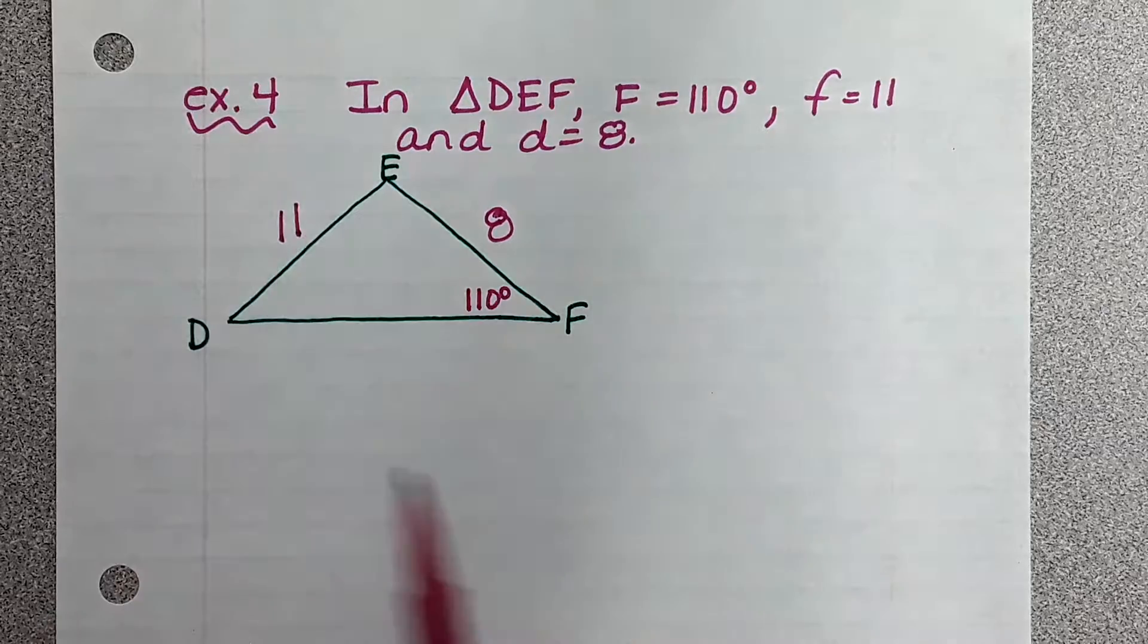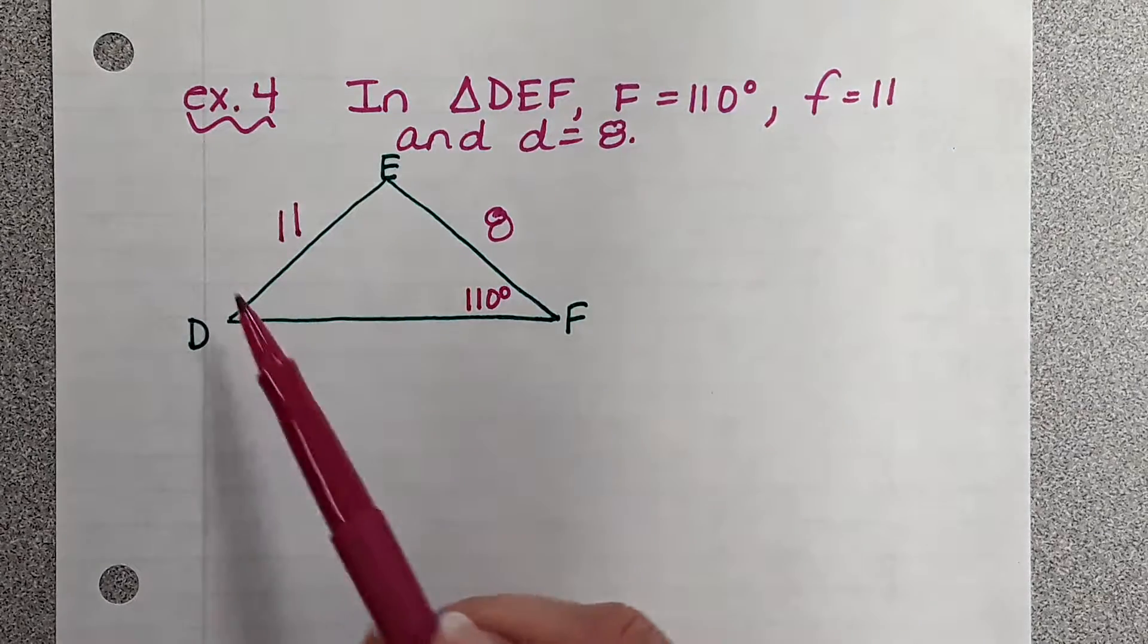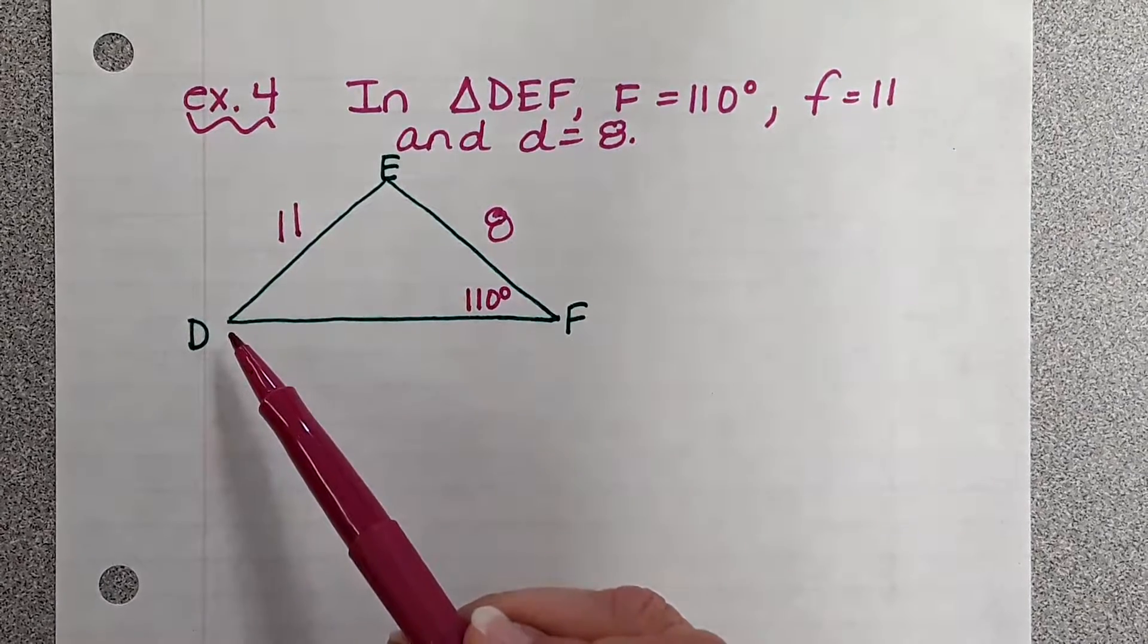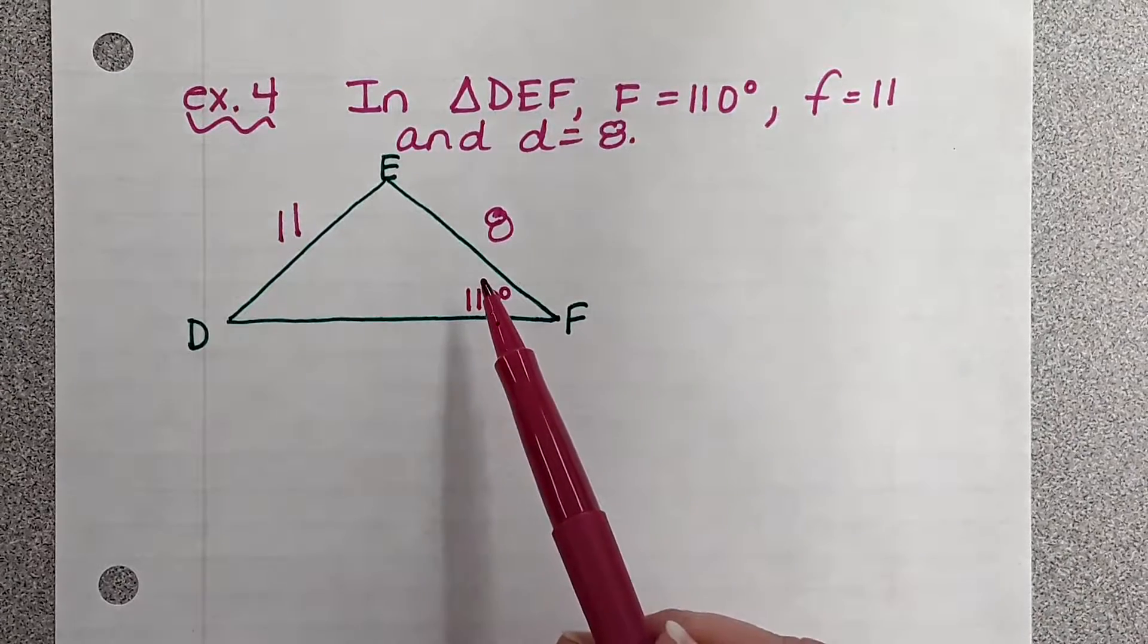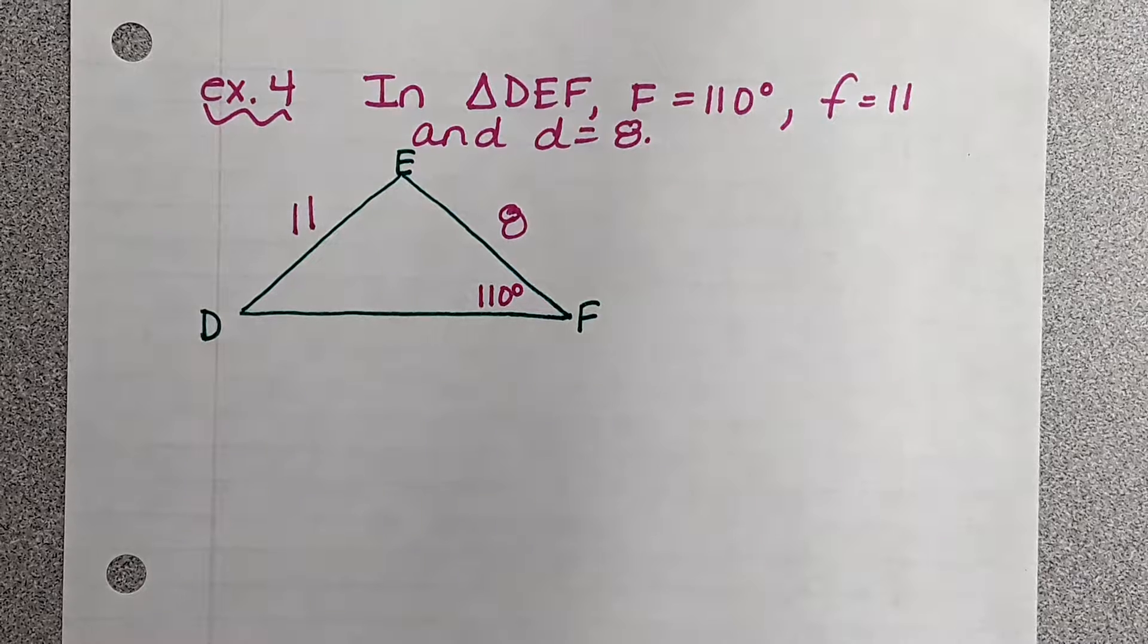Again, we just need to remember a capital letter symbolizes an angle. A lowercase letter symbolizes a side. Now with that, we're going to use that information to find angles and missing sides.